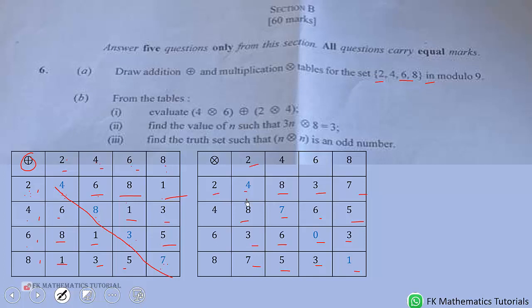This time you have to multiply. For the multiplication, 2 times 2 is 4, so you put it there. 4 times 4 is 16, the remainder is 7. 6 times 6 is 36, the remainder is 0. Then 8 times 8 is 64, the remainder is 1. Now you can do the rest. Try and do it.